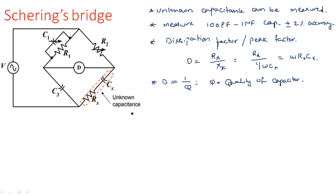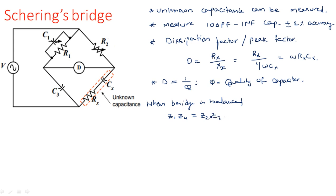Now, coming to the bridge unknown parameters Rx and Cx — how to calculate them. When the bridge is in balanced condition, Z1·Z4 = Z2·Z3. From the circuit: Z1 is a parallel combination of R1 and C1; Z2 equals R2; Z3 is a simple reactive component C3; and Z4 is a series combination of unknown components Rx and Cx.